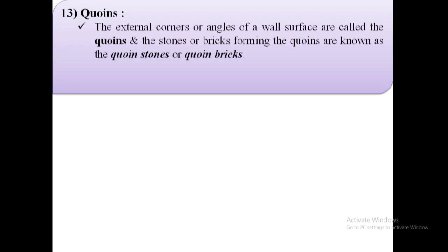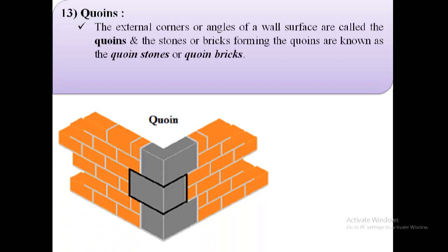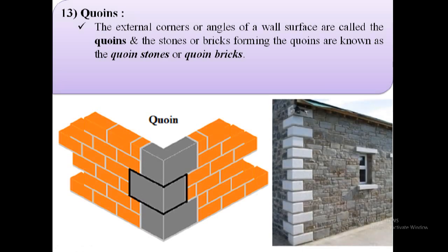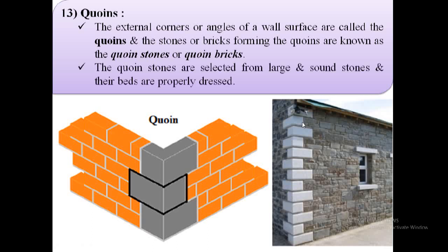The next term is quoins. The external corners or angles of a wall surface are known as quoins. As shown in the image, these are the external corners or angles of the wall surface — these are the quoins. The stones or bricks forming the quoins are known as quoin stones or quoin bricks. Quoin stones are selected from large and sound stones and their beds are properly dressed.